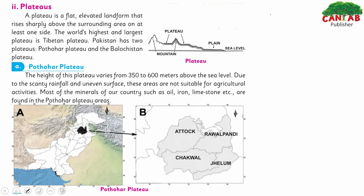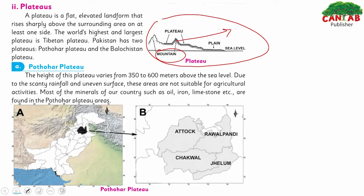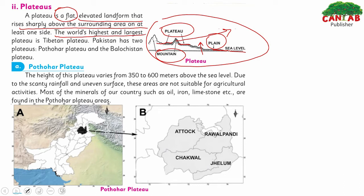The next region is plateaus. A plateau is a flat surface that is above sea level. The area at the same level as sea level is called a plain. A plateau is a flat elevated landform that sharply rises above the surrounding area. The world's highest and largest plateau is the Tibetan Plateau. Pakistan has two plateaus: the Potohar Plateau and the Balochistan Plateau.